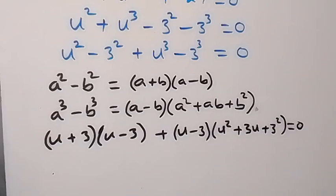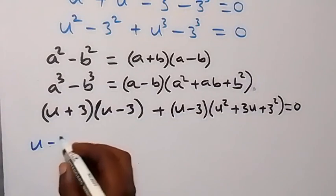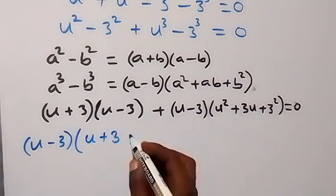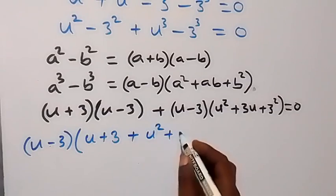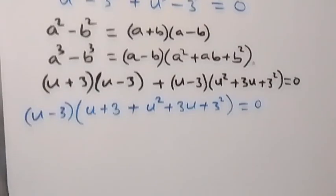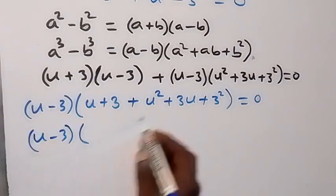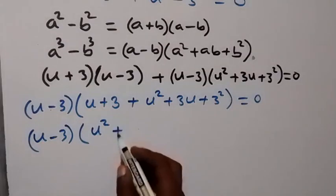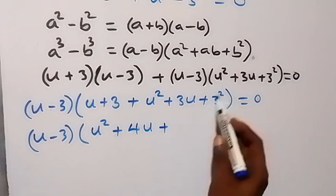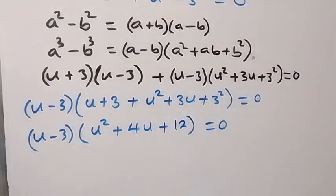In the next step, u minus 3 is common, so we factor it out. This becomes u minus 3 times the bracket u plus 3 plus u squared plus 3u plus 9, which simplifies to u minus 3 times u squared plus 4u plus 12, equals 0.